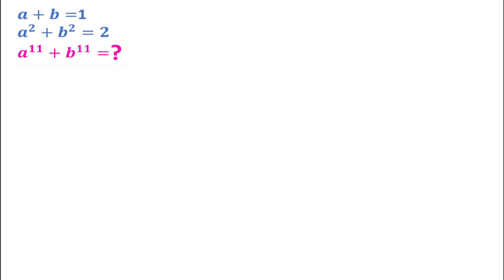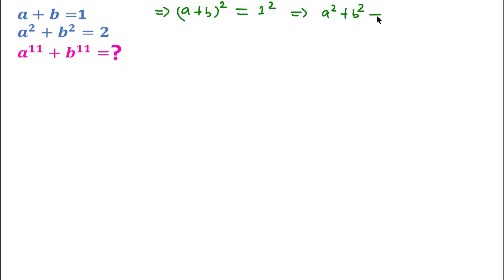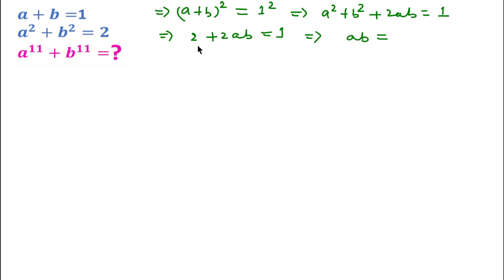To solve this question, we can write according to the question a plus b equal to 1. If we square both sides, then we can write a plus b whole square equal to 1 squared. Expanding this, we get a squared plus b squared plus 2ab equal to 1. Since a squared plus b squared is 2, we substitute and get 2ab equal to 1 minus 2, so ab equal to minus 1 over 2.